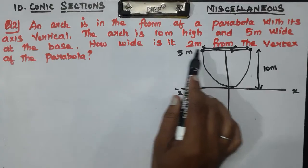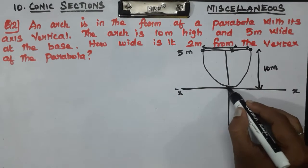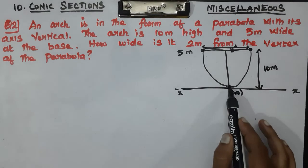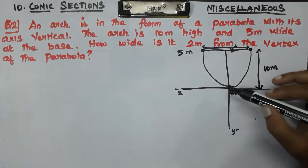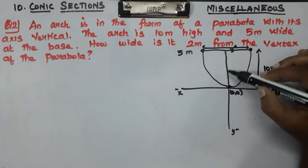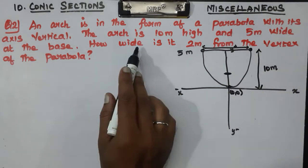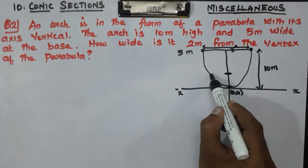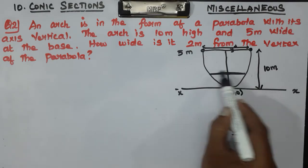How wide is it? 2 meters from the vertex of the parabola. The vertex is at (0, 0). So 2 meters from the vertex: this is 1 meter, this is 2 meters. The half-width is 5/2, so you can see the total width is 5 meters.